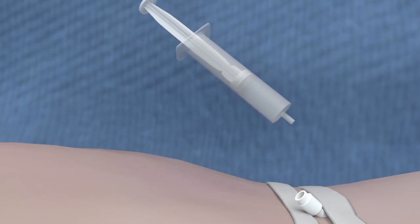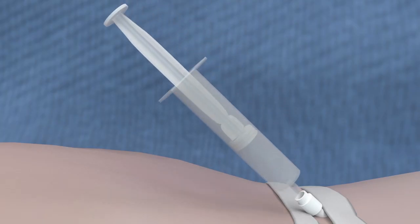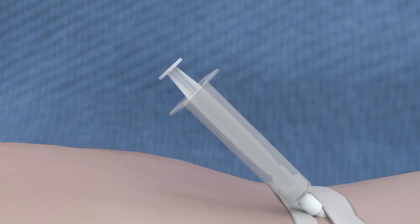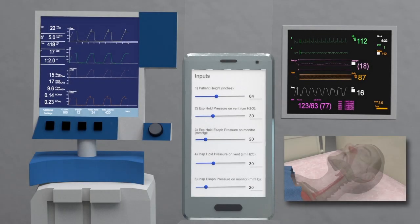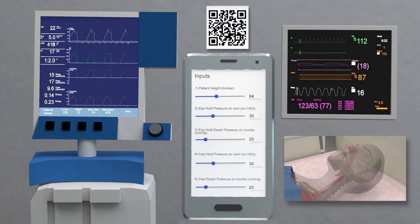You ensure sedation and consider paralysis to avoid having intrinsic contraction of the breathing muscles interfere with your measurements. Then, assemble and insert the esophageal balloon according to the supplied manufacturer instructions and open the calculator that we created to simplify measurements by scanning the QR code shown above.